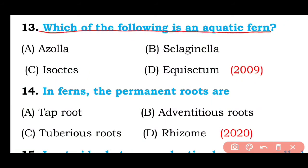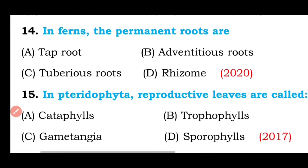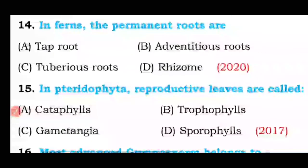Question number thirteen: Which of the following is an aquatic fern — Azolla, Selaginella, Isoetes, or Equisetum? The correct answer is option A — Azolla is a typical example of an aquatic fern.